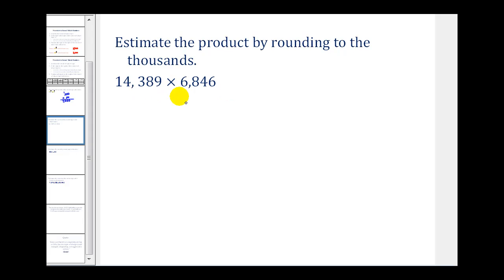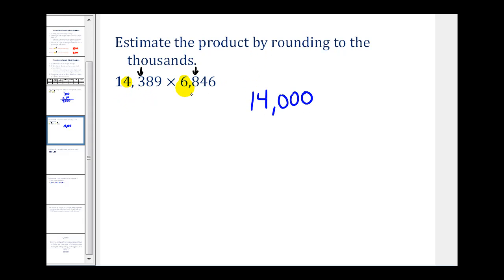Here we want to round to the nearest thousands to approximate this product. We have a four in the thousands here and a six in the thousands here. The digit to the right is three, which means we're going to round this number down. And here we have an eight, so we'll round this one up — giving us 14,000. Now we'll start to multiply.